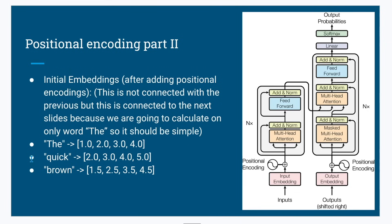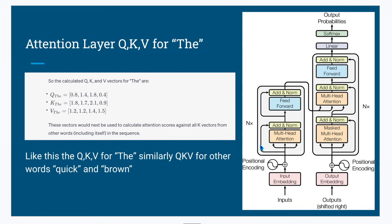Finally, we get Q, K, and V for 'the'. Similarly, we calculate Q, K, V values for 'quick' and Q, K, V values for 'brown'. So we have calculated Q, K, V for all of our tokens: 'the', 'quick', 'brown'.